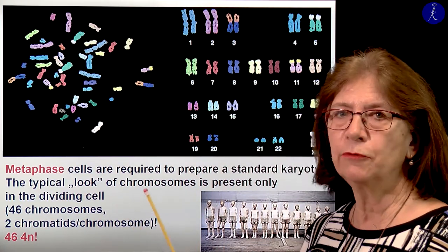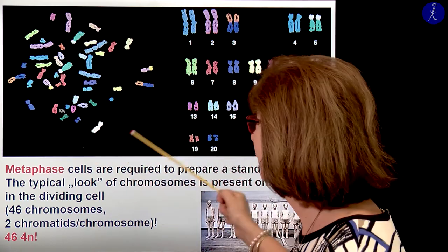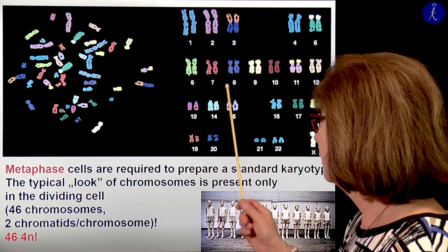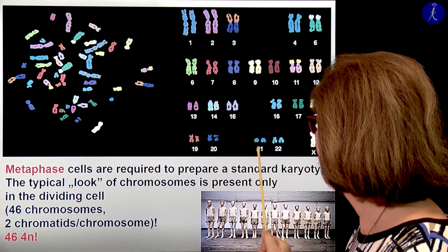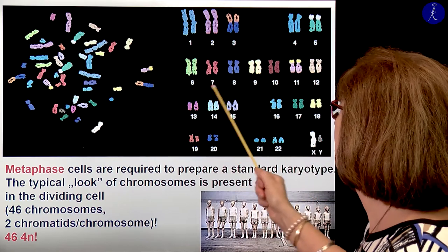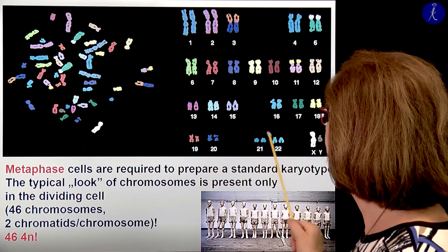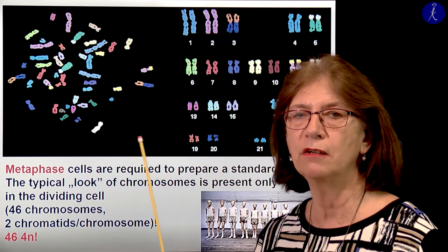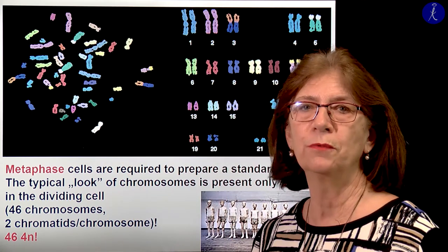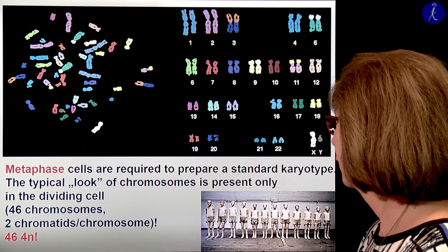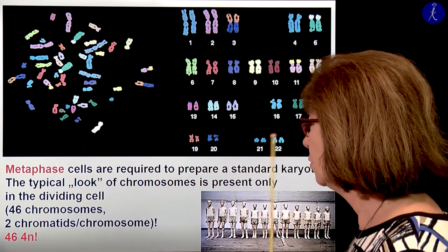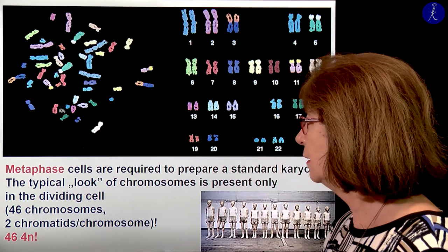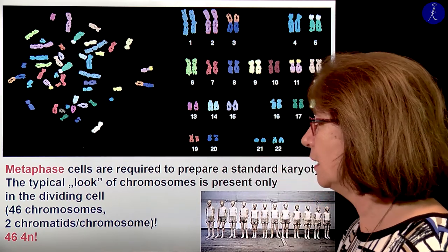When you first see the karyogram during an examination, it looks like a mess. But humans have a tendency to make order. They arranged it like a gym row — the biggest stands first and the smallest at the end. So we have 22 pairs of somatic chromosomes and one pair of sex chromosomes. Again, 23 pairs make 46 chromosomes, because in each pair you always have two chromosomes — one maternal and one paternal. That is 46 chromosomes, two chromatids in each chromosome, altogether 92 chromatids, and this we describe as 46, 4n.